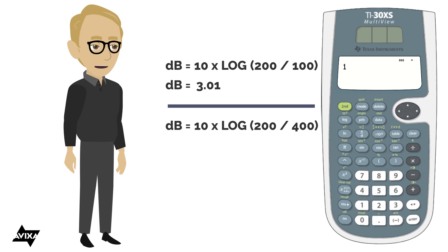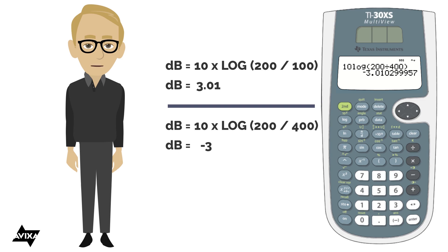Clear the calculator and enter 10 × log(200 / 400), close the parenthesis, and the result is negative 3 dB. Note that there's a difference of only 100 watts in the first example but 200 watts in the second. The lesson is: every time you double or cut power in half, it's a 3 dB change.